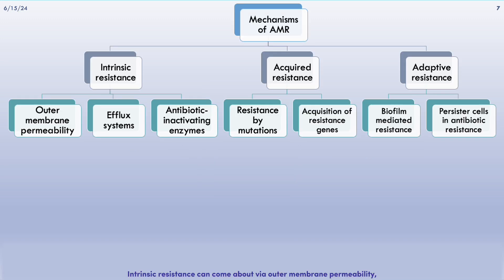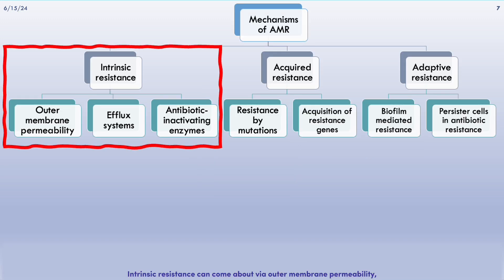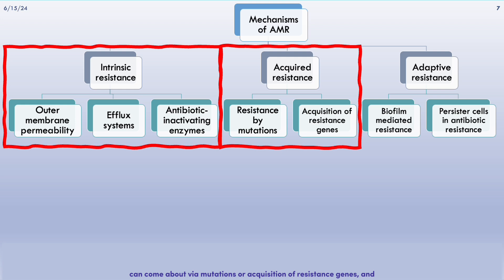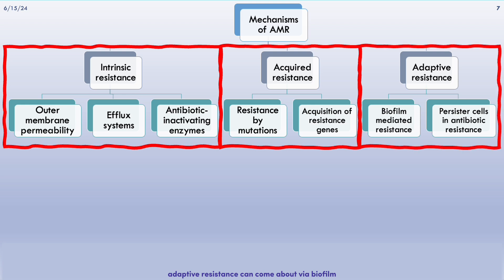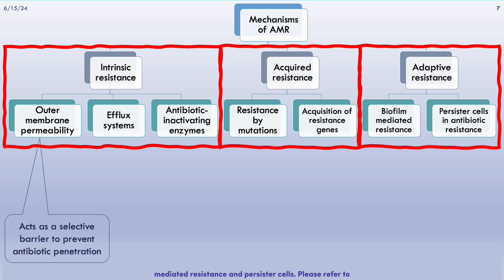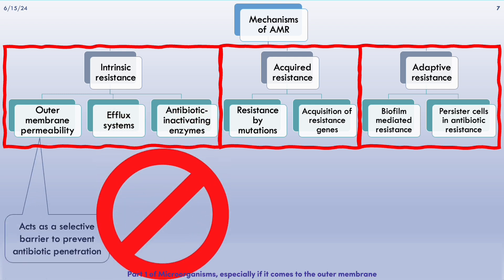Intrinsic resistance can come about via outer membrane permeability, efflux systems, or antibiotic-inactivating enzymes. Acquired resistance can come about via mutations or acquisition of resistance genes. Adaptive resistance can come about via biofilm-mediated resistance and persister cells. Please refer to part 1 of microorganisms, especially regarding the outer membrane acting as a selective barrier to prevent antibiotics from penetrating the bacteria.